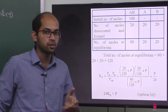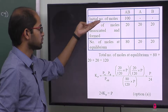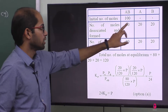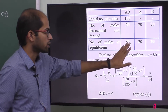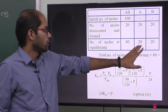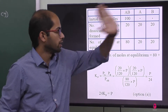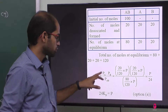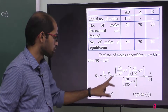20% is dissociated. Taking 100 initial moles of AB, 20% dissociation means 20 moles dissociate. So at equilibrium: AB has 80 moles, A has 20 moles, B has 20 moles. Substituting into Kp: Kp equals partial pressure of A times partial pressure of B divided by partial pressure of AB.